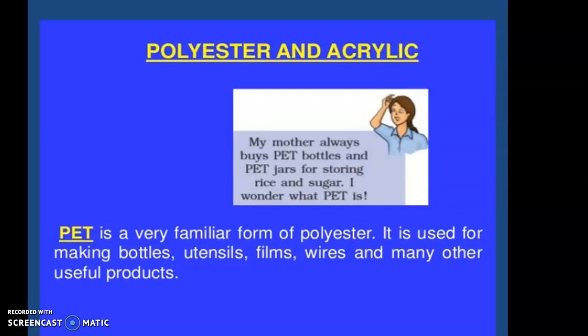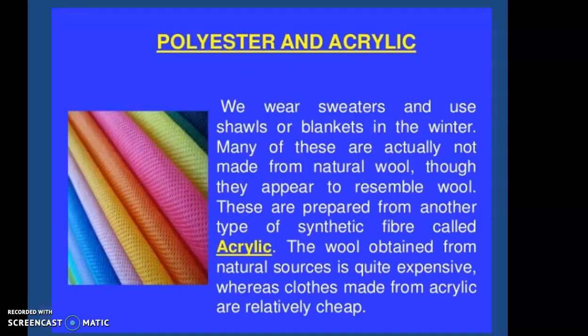PET — Polyethylene Terephthalate — is a very familiar form of polyester. It is used for making bottles, utensils, films, wires, and many other useful products. PET is also used in making synthetic clothes that are easy to wash and wrinkle-free, as well as films, utensils, and wires.